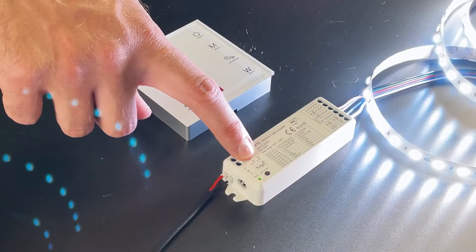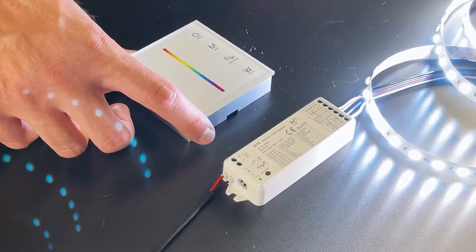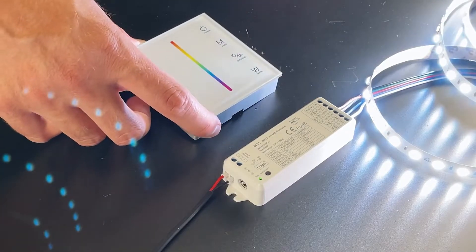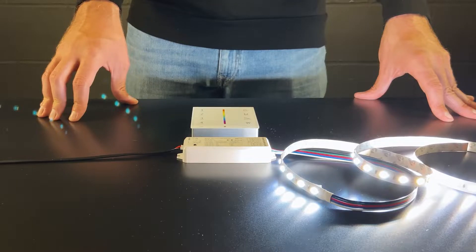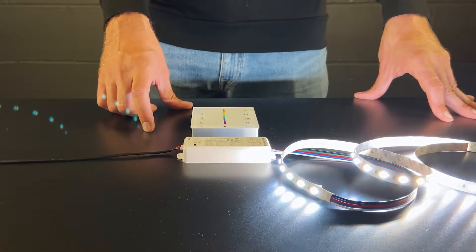The WT5 acts as the receiver and the wall plate will act as the controller. We'll now go through how to pair the RF wall plates to the WT5 receiver.